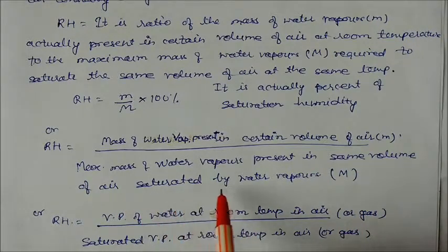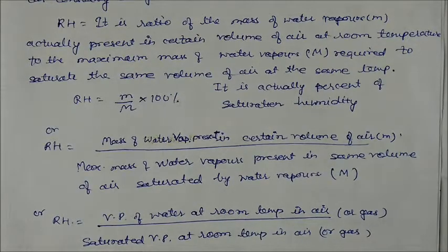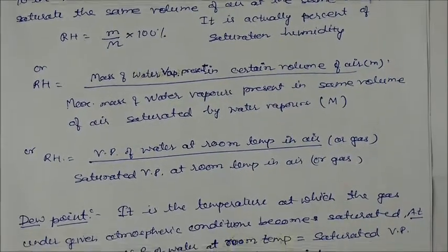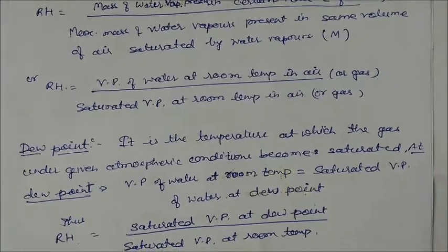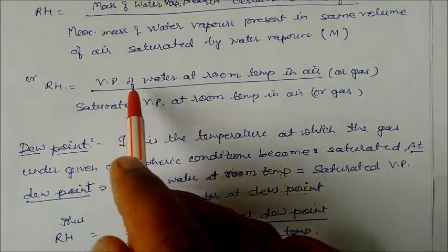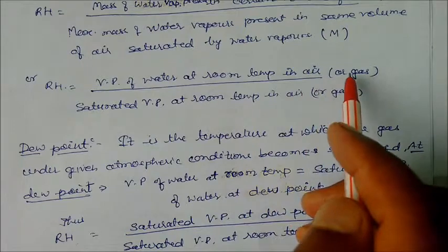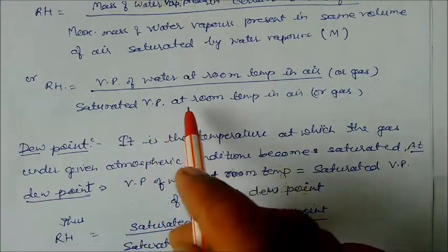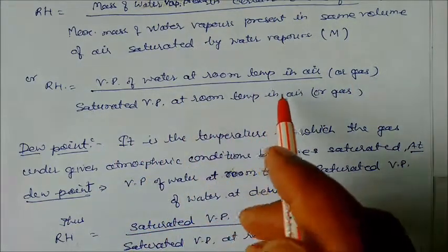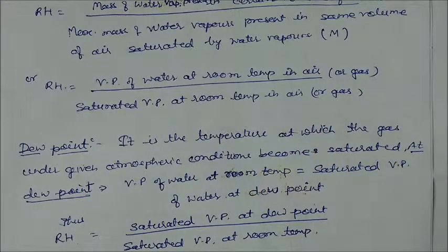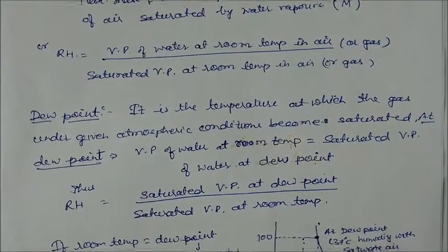Volume is the same; only the mass of water vapor differs. A third way to write RH is: vapor pressure of water at room temperature in air or gas, divided by saturated vapor pressure at room temperature in air or gas.